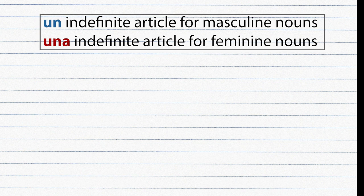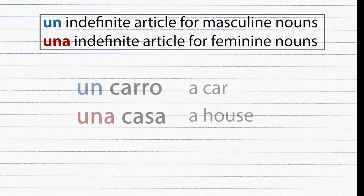The indefinite articles are Un and Una. Un is used for masculine nouns and Una for feminine nouns. For example: Un carro, Una casa.